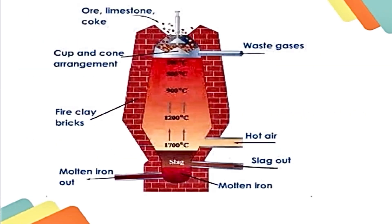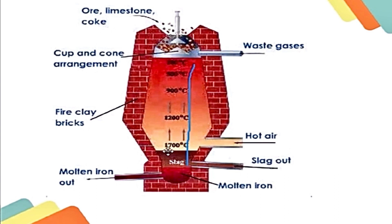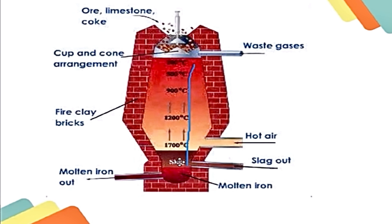The slag is less dense than molten iron, so it floats above it and settles in a layer above the molten iron. Slag does two important things: it removes the impurity silicon dioxide, and it prevents the molten iron from being further oxidized back into iron oxide.